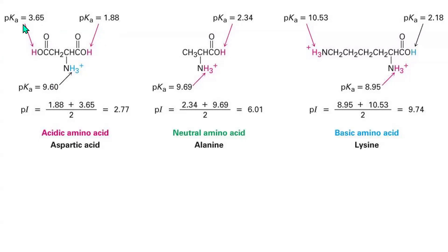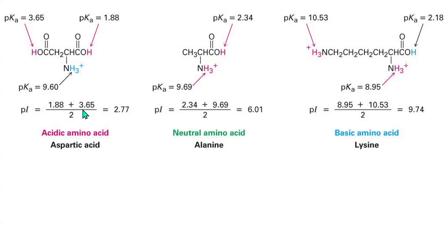The R-group carboxyl group has a pKa of 3.65, and that of the alpha carbon is 1.88. And then, for the amino group, the pKa is 9.6. Since this is an acid, the amino group is not relevant, so we will not consider it. Therefore, we are going to use the pKa for both the carboxyl groups. The pI here is (1.88 + 3.65) / 2, and we have 2.77 as the pI — that is the isoelectric point of the acid.